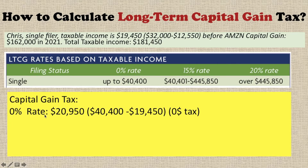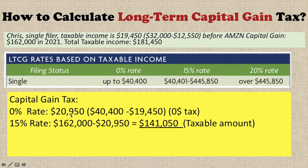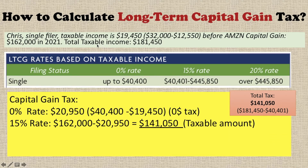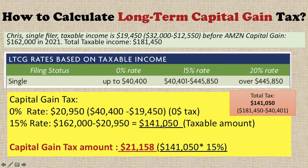For Chris's situation, the amount taxed at 0% is calculated by taking the $40,400 ceiling minus his taxable income from salary, which gives you the portion of capital gains taxed at zero percent. The rest of the capital gain is taxed at 15%. You can confirm this by taking the total taxable income minus the 0% rate ceiling to get the same number — those amounts are taxed at 15%.